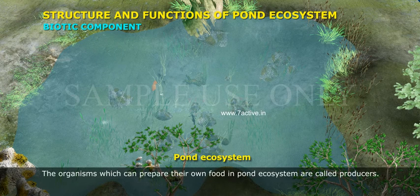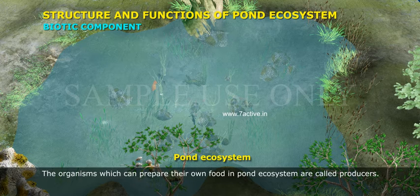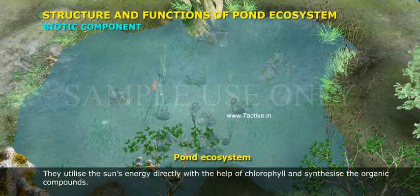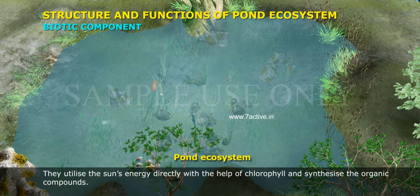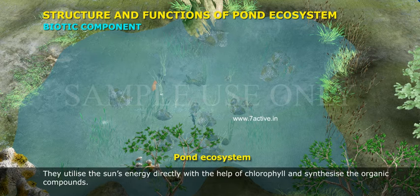The organisms which can prepare their own food in a pond ecosystem are called producers. They utilize the sun's energy directly with the help of chlorophyll and synthesize organic compounds.